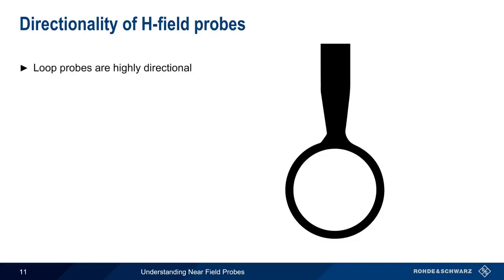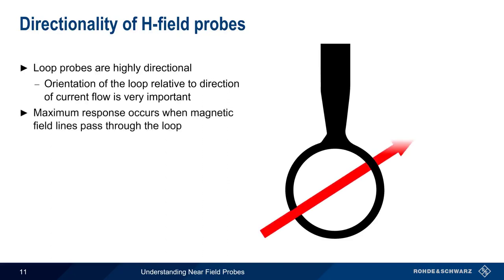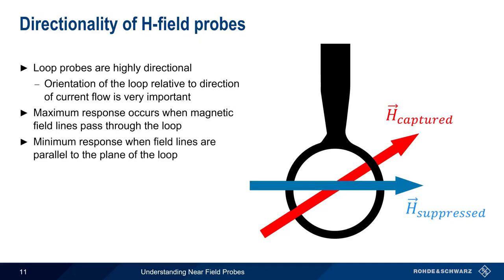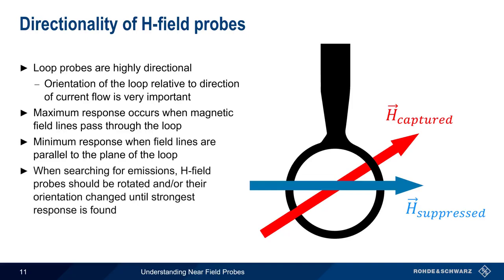Because loop probes are highly directional, the orientation of the loop, relative to the direction of current flow, is also very important. The maximum response occurs when the magnetic field lines pass through the loop, and the minimum response occurs when the field lines are parallel to the loop, that is, when the field lines don't pass through the loop. Therefore, when searching for emissions using H-field probes, the probe should be rotated, and or have its orientation changed, until the strongest response is found.